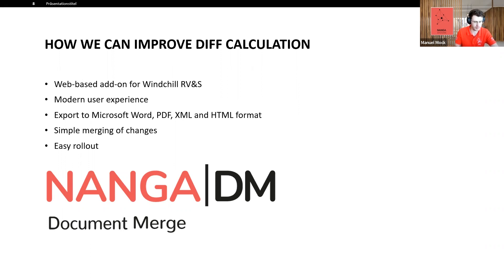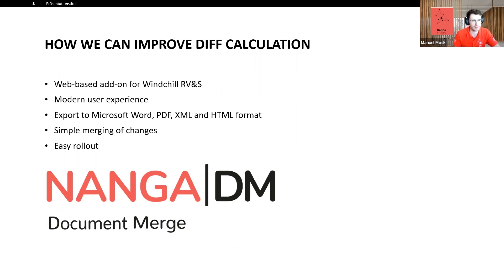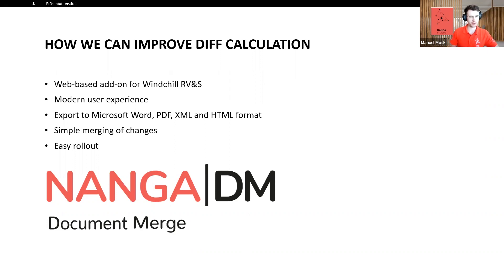Our proposal to improve difference calculation is our new product: Nanga Document Merge. It is a web-based add-on for RBNS with a modern user experience and interface, multi-language support, selectable themes, and export functionality for Microsoft Word, PDF, XML, and HTML formats. You can merge changes in a very simple way. Deployment is easy — you just need a WRAP server, store the solution there, and all users can access it via web browser with no need to distribute it to clients.